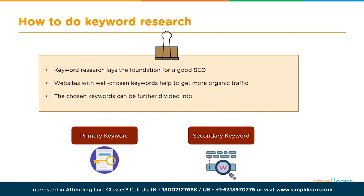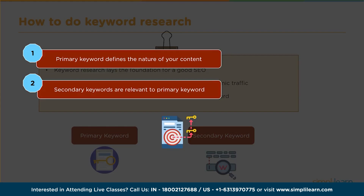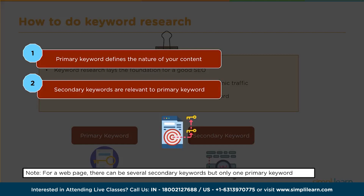If you choose your keywords properly and rank for them, it leads to better engagement and conversions. Every page should have at least a primary keyword and a secondary keyword. Primary keywords define the nature of your content, while secondary keywords are relevant to the primary keyword. You may choose a primary keyword that is relevant but doesn't rank high — the secondary keyword, also relevant to the content, gives you another chance to rank.